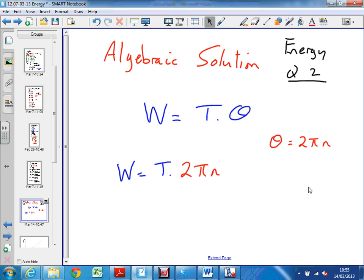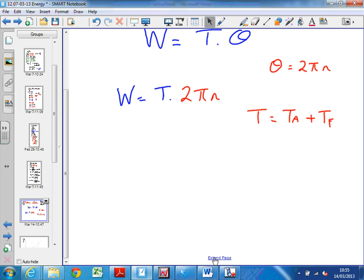So instead of theta in this formula, I can write the work done is T times 2 pi n. What I'm doing here is trying to use the color to demonstrate, I'm substituting in. Instead of theta, I'm putting in 2 pi n. The torque is the total torque.